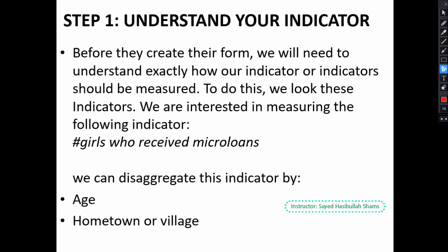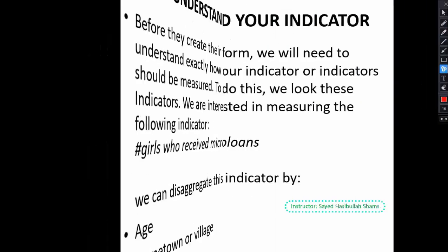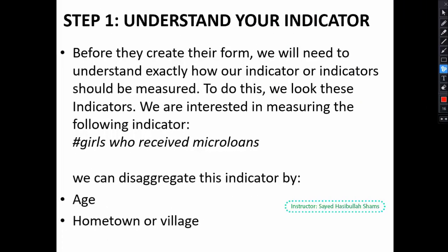First of all, we must understand our indicator and create a clear picture of what we should exactly have in this indicator. For example, here we have 'number of girls who received microloans.' This is one of the key performance indicators. In this indicator we find that it can be disaggregated by age and hometown or village. One of the criteria of a strong indicator is that it should be disaggregated, so this is a good indicator.